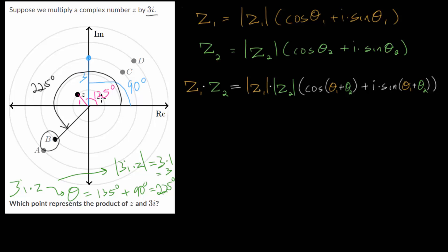It looks like choice B is the correct option here. It has a magnitude of 3 and an angle of 225 since we are adding the two angles: 90 plus 135 gives us 225. We multiply their magnitudes, their distance from the origin, so 1 times 3 which brings us out to rung number 3.